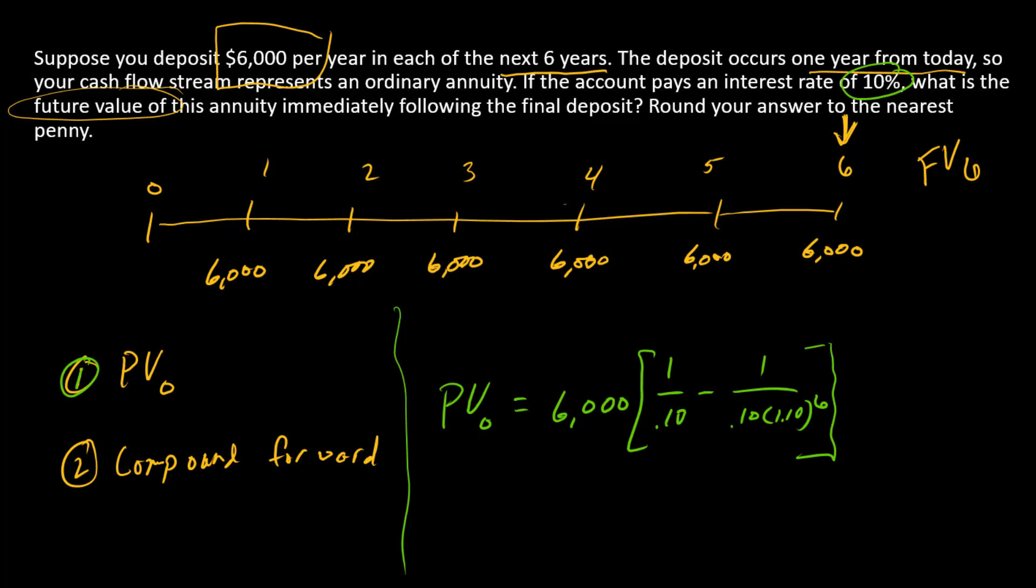That's step one. Now I'm going to skip forward to step two. I'm going to make some edits in red. In step two, I'm going to change this to a future value in period six. How do we go from a present value in time zero to a future value in time six? We compound forward.